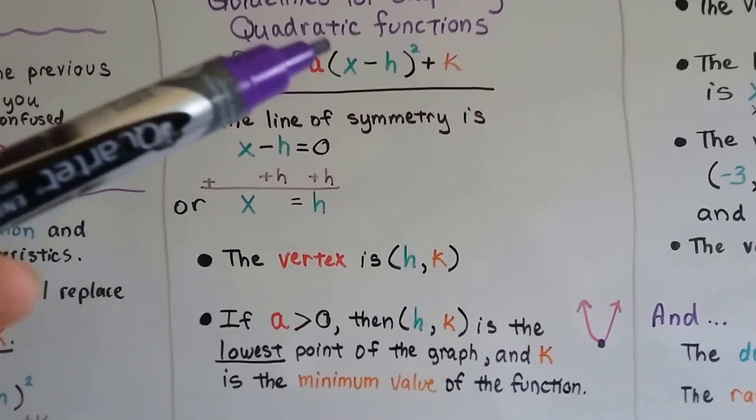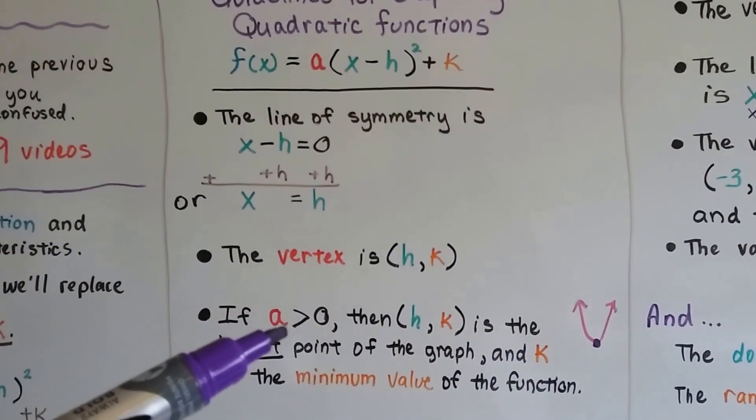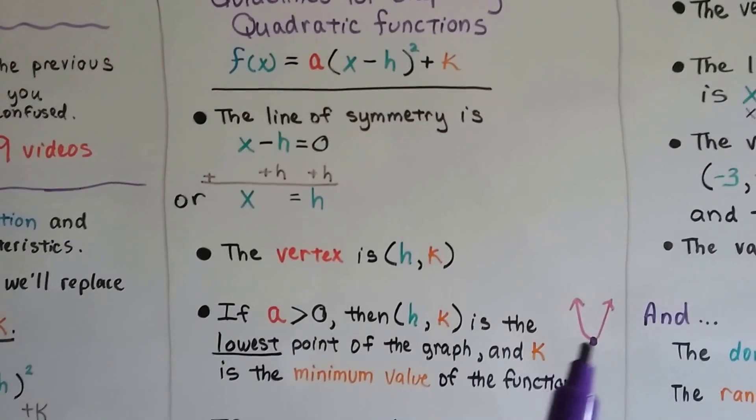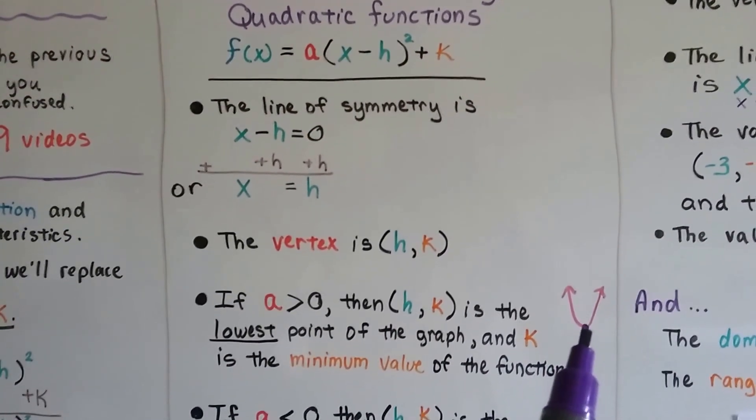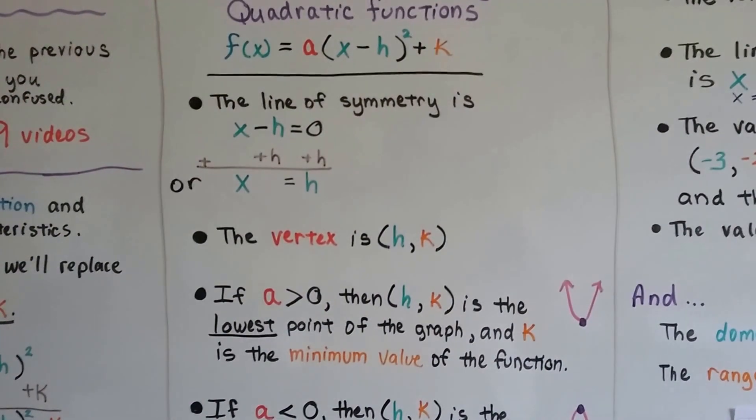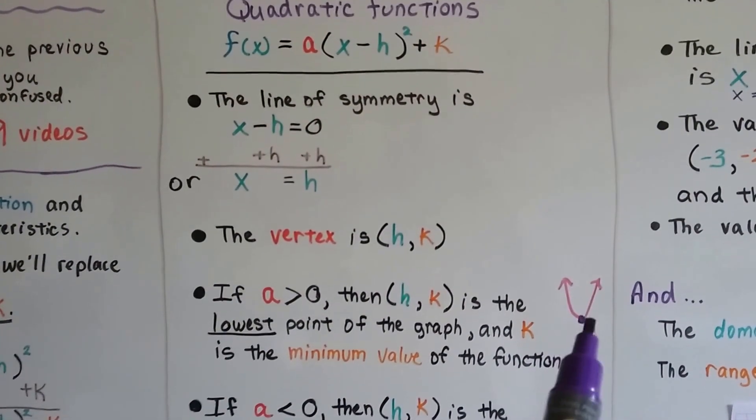And if a, right here, this value for a is greater than zero, then the point (h, k) is the lowest point, like this. If we have a parabola, that's the lowest point of the graph. And the k is the minimum value of the function.